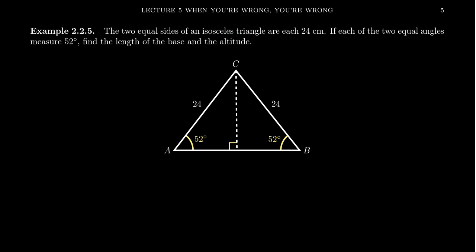With that in mind, we want to compute the length of the base and the altitude of this isosceles triangle. An altitude with respect to a triangle is the unique line that connects a vertex to the opposite side of the triangle so that those two lines form a perpendicular, right angle. For example, the altitude of A would be the line passing through vertex A and perpendicular to the opposite side, giving us a right angle here.